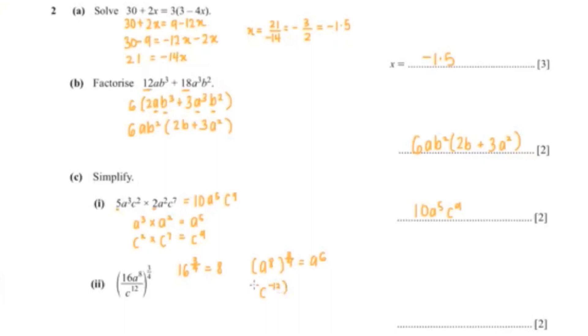And for c, c to the power negative 12, to the power 3 over 4. So negative 12 multiplied with 3 over 4 is c to the negative 9. Our answer is 8a to the power 6, c to the negative 9, or you could write it as 8a to the power 6 over c to the power 9.